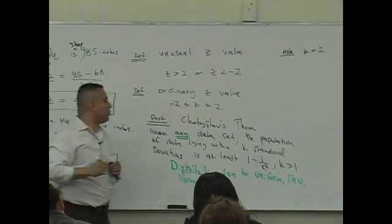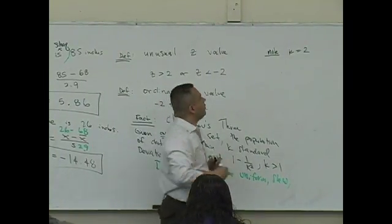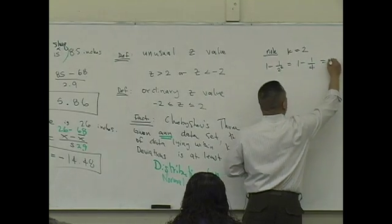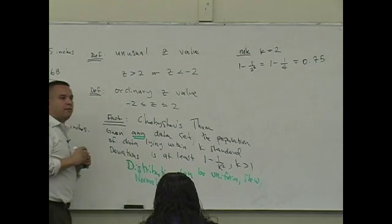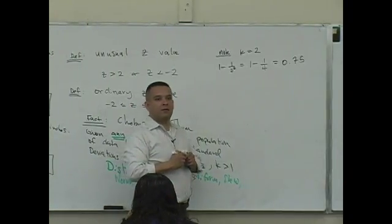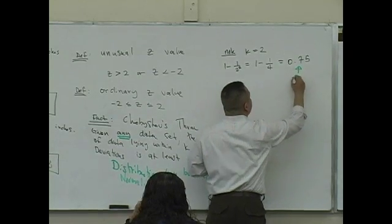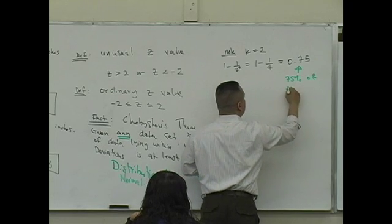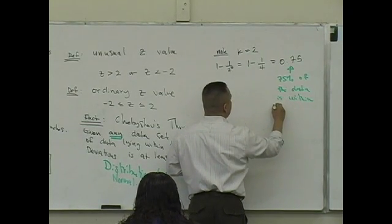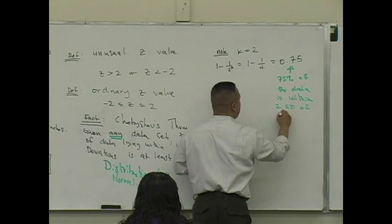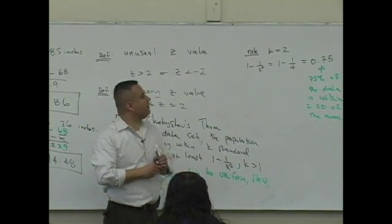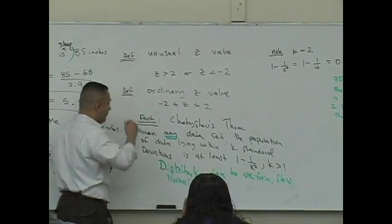The theorem applies when K is larger than one. What is one minus one over two squared? Isn't that one minus one over four? Isn't that 0.75? About 75% of the data is within two standard deviations of the mean. At least 75% — and 'at least' is a key word here.